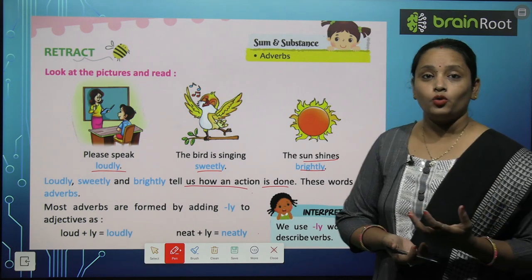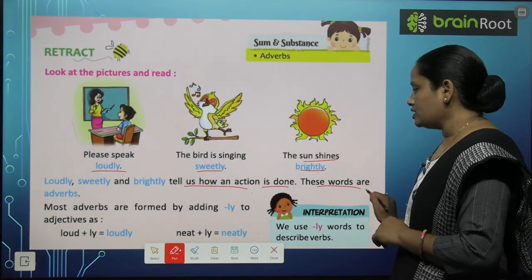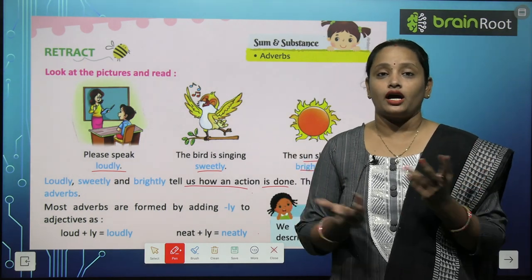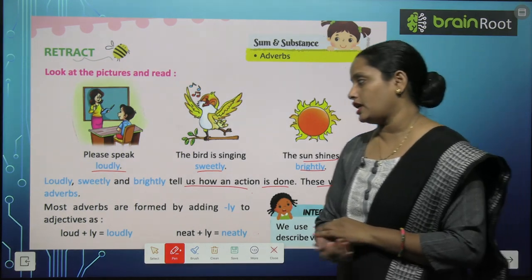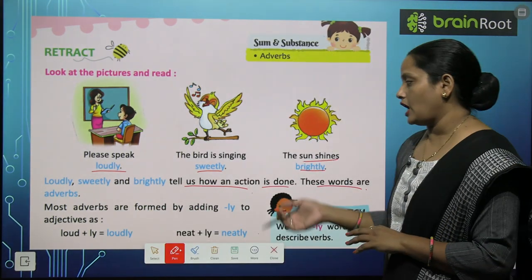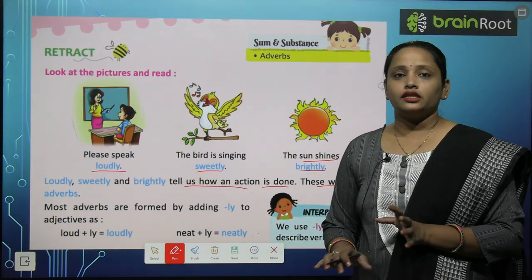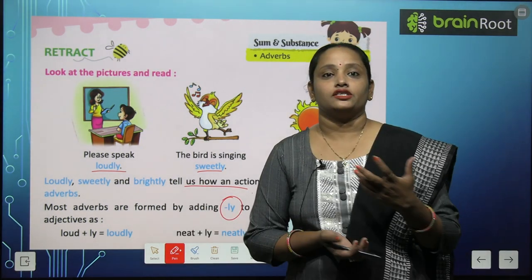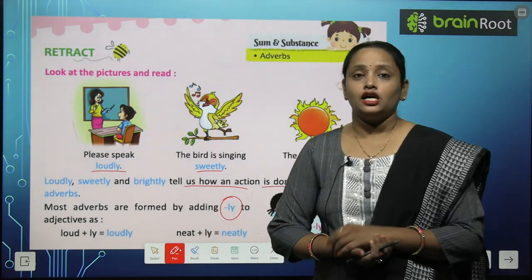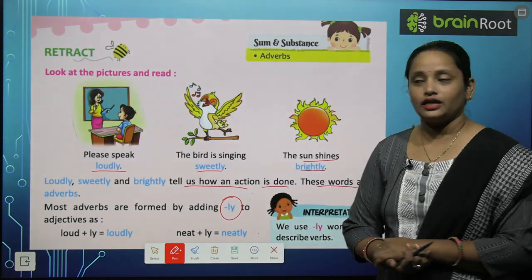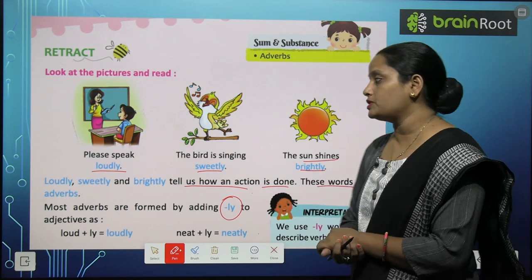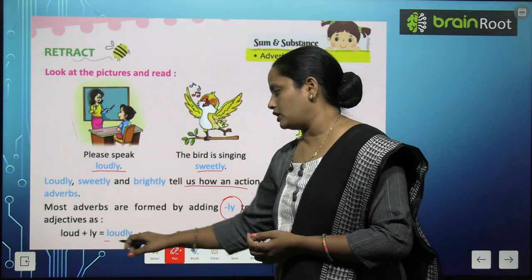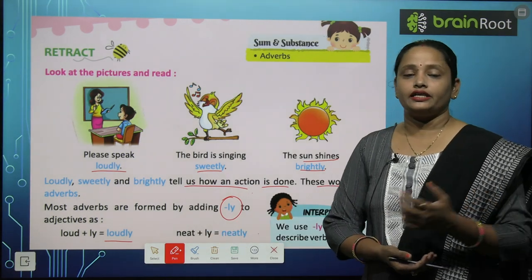Yeh hamen batate hain ki jo kaam ho raha hai, woh kaise ho raha hai? These words are adverbs. Toh aise words jo yeh batayen ki kaam kaise ho raha hai, aise words ko adverbs kaha jata hai. Most adverbs are formed by adding LY — to adjectives. Humne abhi describing words padhe the na? Toh un describing words mein LY ko add karke adverbs banaye jate hain. For example, loud mein ly add kiya toh bana loudly. Neat mein ly add kiya toh bana neatly.